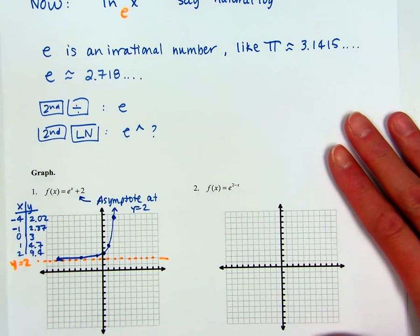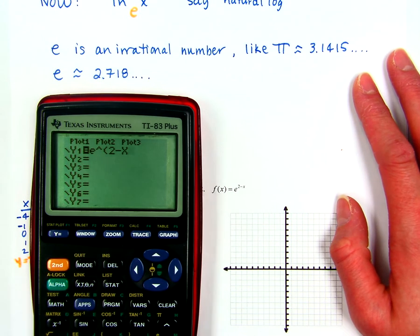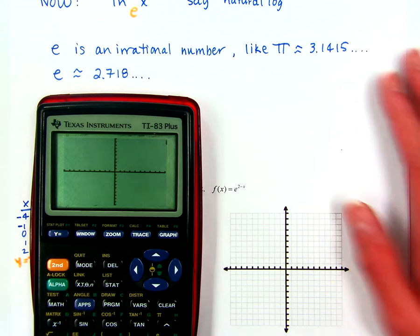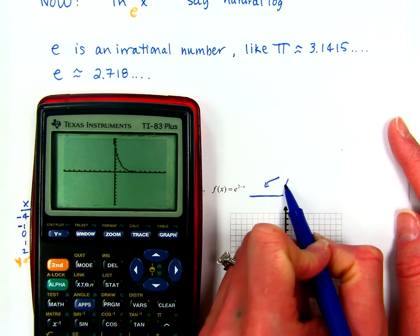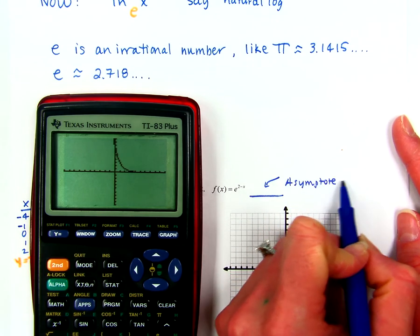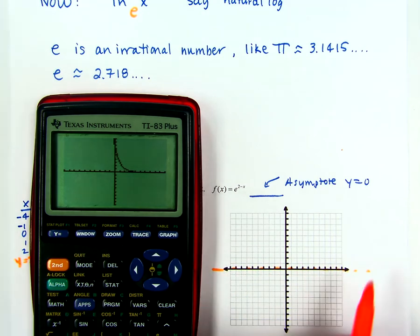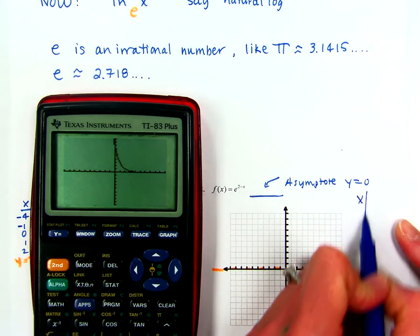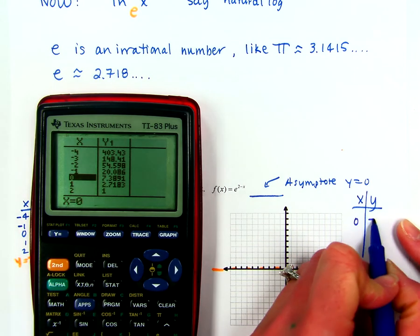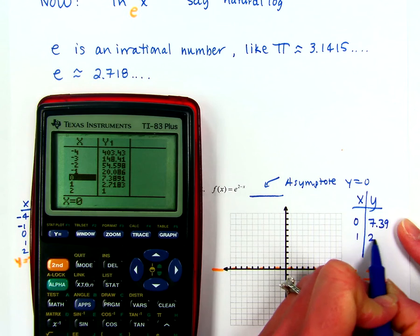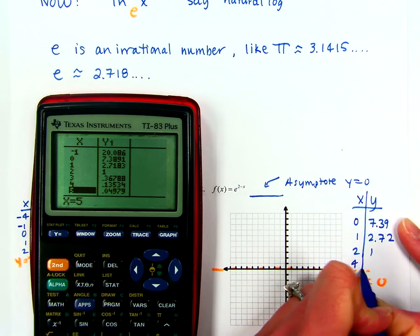Problem number 2, we're going to do exactly the same thing. Type it in — we've got E raised to the (2 minus X), so we do want the whole thing up in the exponent. Hit Graph. This time there's nothing being added at the end, so my asymptote is at Y equals 0 — that's a horizontal line at the X-axis that my graph gets really close to but doesn't actually touch. From the table: (0, 7.39), (1, 2.72), (2, 1), and (4, 0.14).